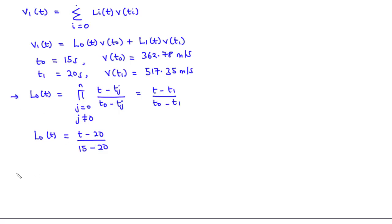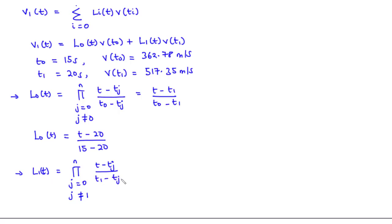For L1(t), with i=1, j must not equal 1, so j equals 0. This gives L1(t) = (t minus t0) divided by (t1 minus t0) = (t minus 15) divided by (20 minus 15). At this point, we have all four components.